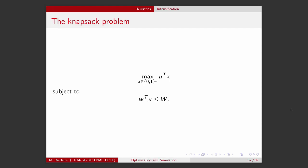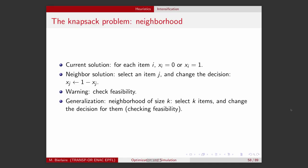Let's take some examples based on the optimization problems we have introduced before, like the knapsack problem. What would be an example of a neighborhood for the knapsack problem? The current solution is a vector of binary variables, so for each item i, the value is 0 if i is currently not in the sack, and 1 if i is currently considered to be in the sack.